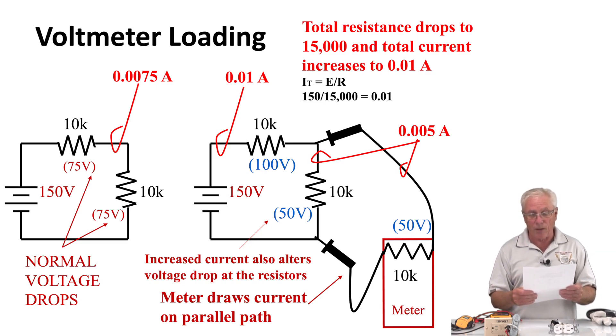Looking up above, I'm showing the total resistance in the circuit now drops to 15,000 ohms, and the total current increases to 0.01 amps, because we have altered the amount of resistance on the circuit. We've provided another path for current when we put the meter in place. On the very first circuit, we had 0.0075 amps of current draw. On this circuit now, we are drawing 0.01, in other words we went from 7 milliamps to 10 milliamps.